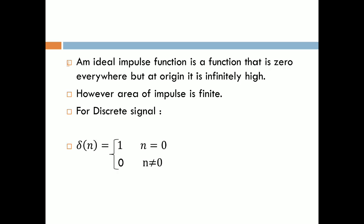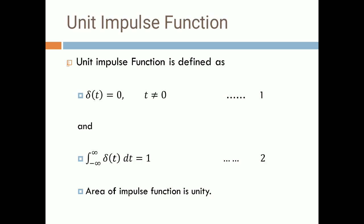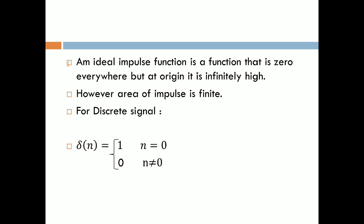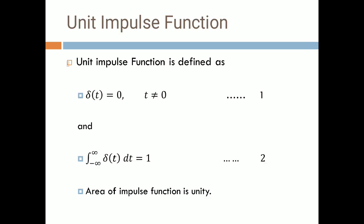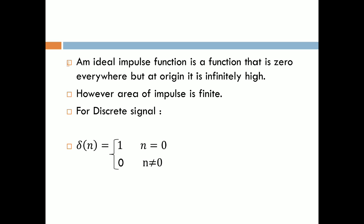An ideal impulse function is a function that is 0 everywhere, but at the origin it is infinitely high. When t is not equal to 0, all values are 0, and when t = 0, the value is 1 — meaning the ideal impulse function is 0 everywhere but at the origin, where it is infinitely high. The area of the impulse is finite. For discrete signals, delta(n) = 1 when n = 0, and delta(n) = 0 when n ≠ 0.